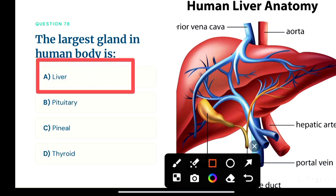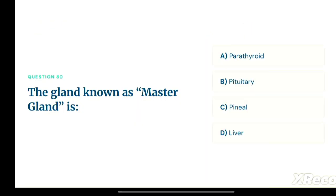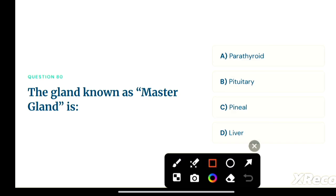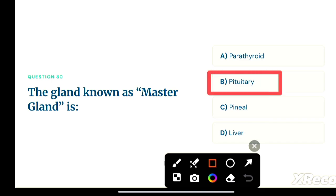Next question: the gland known as the master gland is — option A: parathyroid, option B: pituitary, option C: pineal, option D: liver. The correct answer is option B, pituitary. The pituitary gland is known as the master gland.